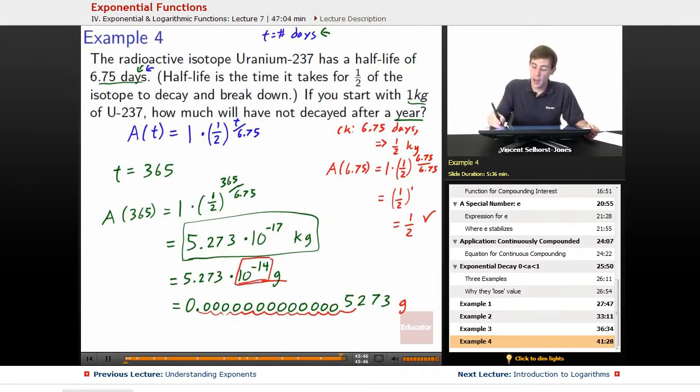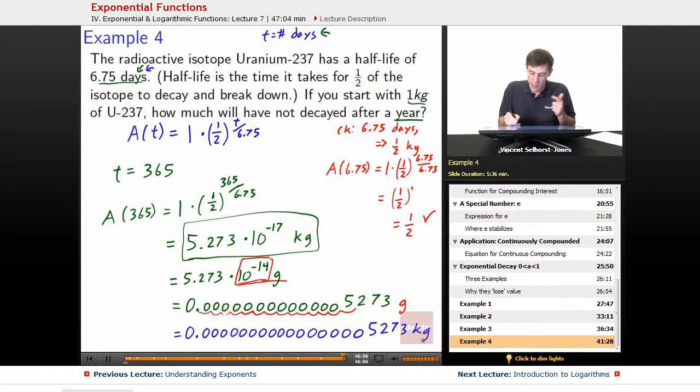Or alternatively, we could also write this with kilograms as the incredibly tiny 0.00000000000000005273 kg. And if we counted that one out as well, we'd have 1, 2, 3, 4, 5, 6, 7, 8, 9, 10, 11, 12, 13, 14, 15, 16, 17.